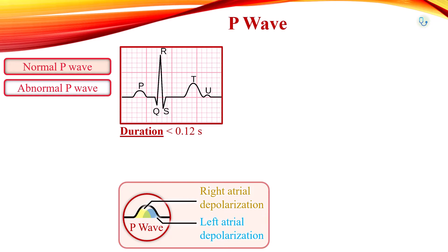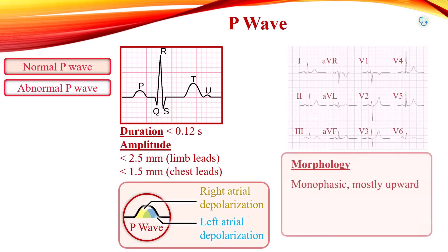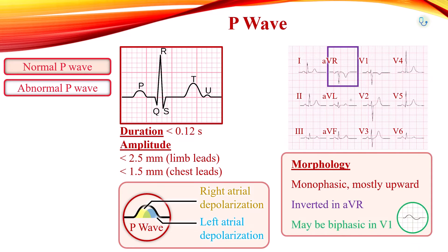The amplitude or height of P wave should not be greater than 2.5 mm in limb leads, and 1.5 mm in chest leads. In 12-lead EKG, P wave is monophasic, directed upward in most leads, and inverted in AVR. Sometimes, biphasic P wave may be seen in V1.